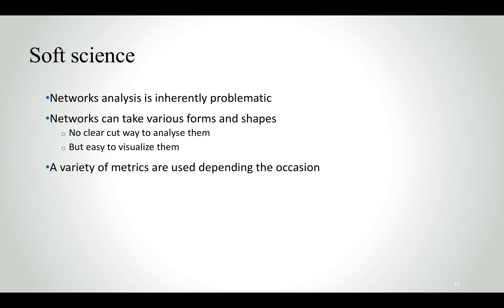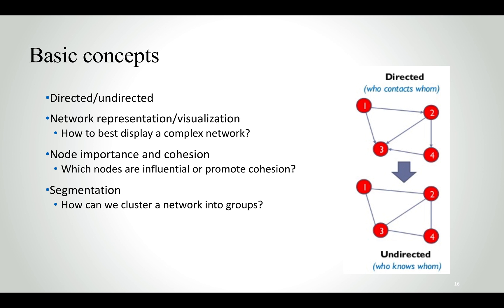SNA is a soft science. It's not a hard science. It's inherently problematic. The reason is that first of all, there are various forms and shapes the networks can take. There's not always a clear way to analyze them or visualize them. Also, there are many metrics, and really, there's no single set of metrics which are the best one. Everything depends on the context. There are many judgments that a researcher or analyst has to do when performing social network analysis, and these depend on the context and the task.